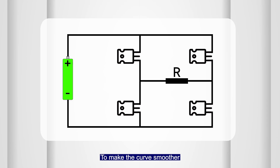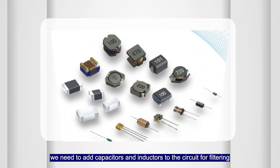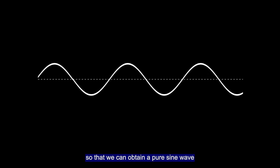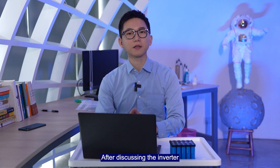To make the curve smoother, we need to add capacitors and inductors to the circuit for filtering, so that we can obtain a pure sine wave.